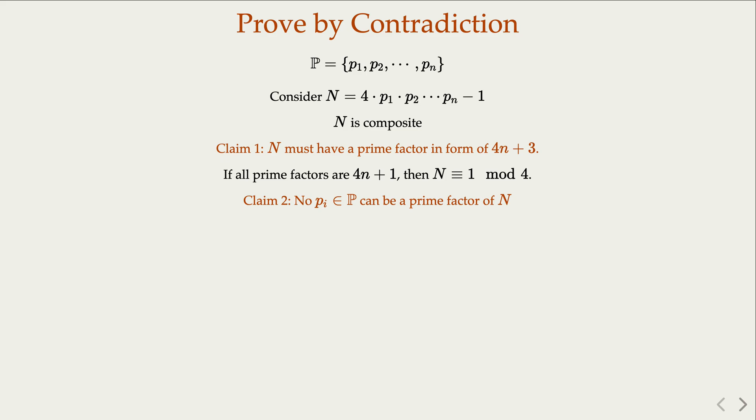because p_i is in the form of 4, p_1, p_2, up to p_n, so we know that by the way N is constructed, number 1 must also, the p_i must also divide number 1, which is not possible. That's a contradiction.